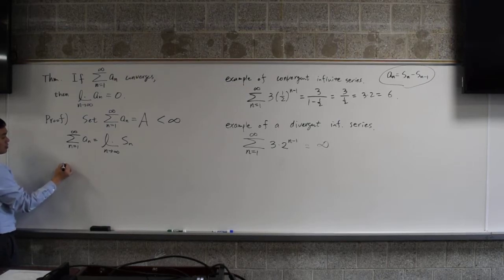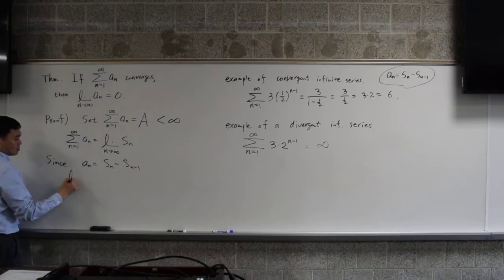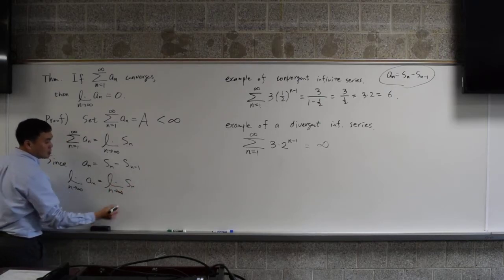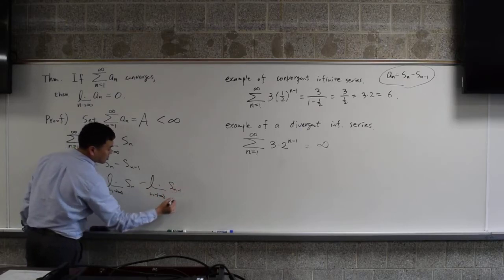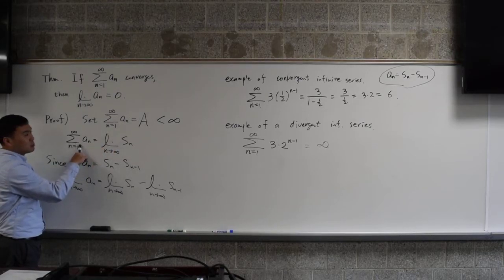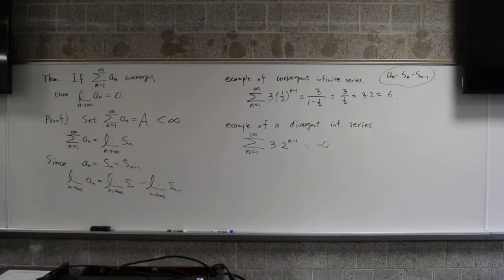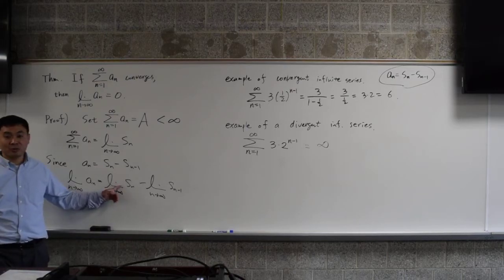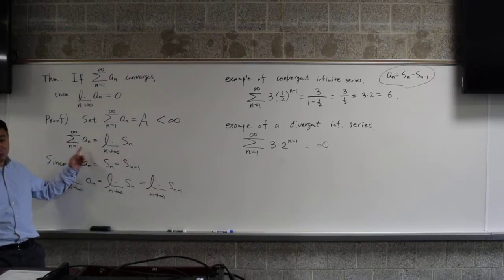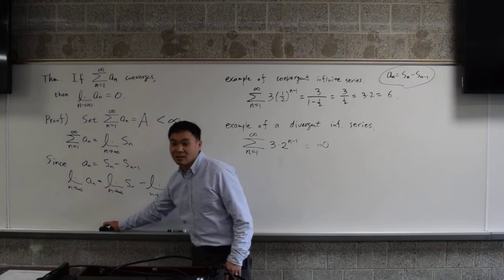So we have, since a_n is S_n minus S_n minus 1, the limit of n going to infinity of a_n would be the limit of n going to infinity of S_n minus S_n minus 1. What's this limit? This limit is this, which is a. What's this limit? It's the same thing as this one, just minus 1. But it's plugged in infinity, so it's still S of infinity. S of infinity is what? It's this summation, which is a. So you get a minus a, which is 0. So that's the proof.